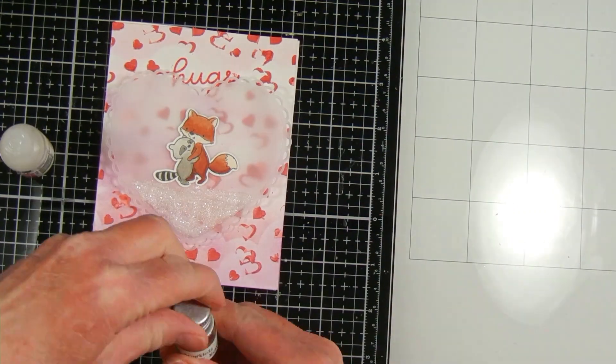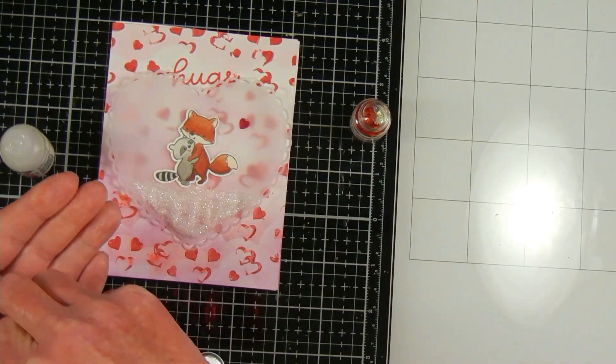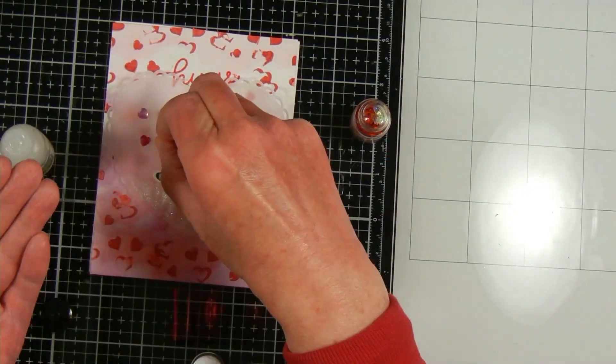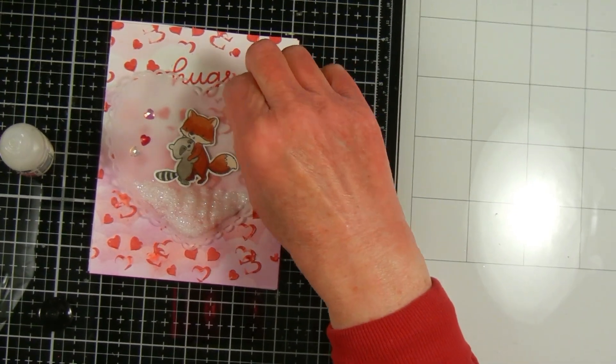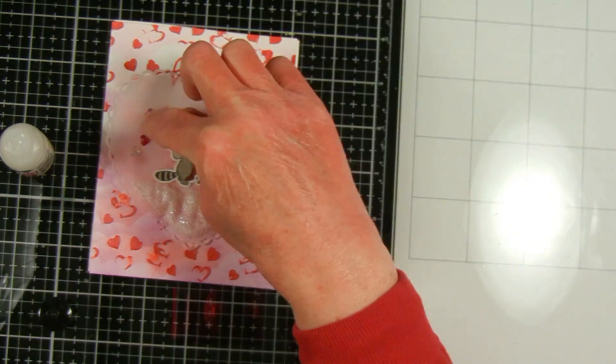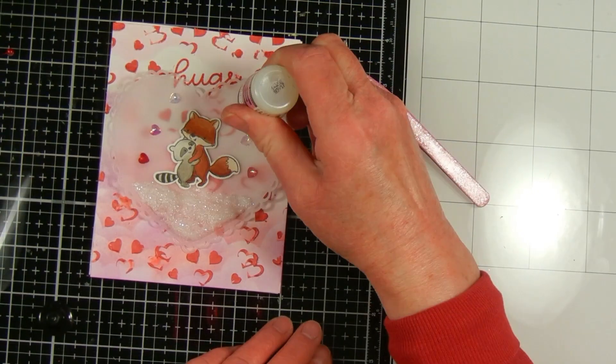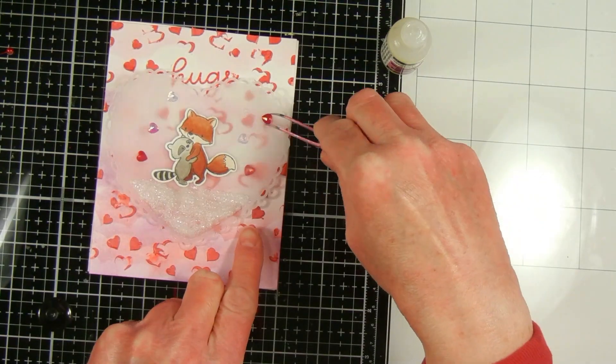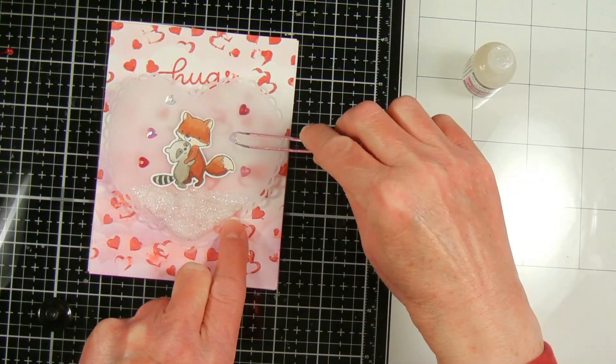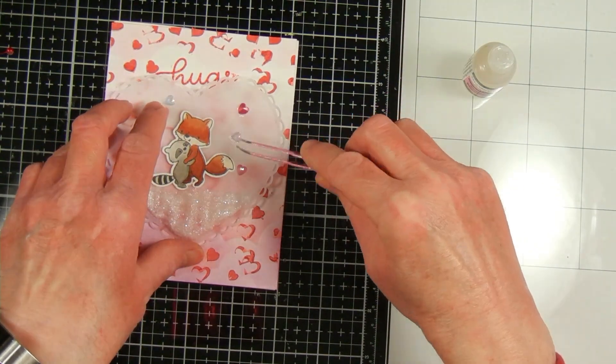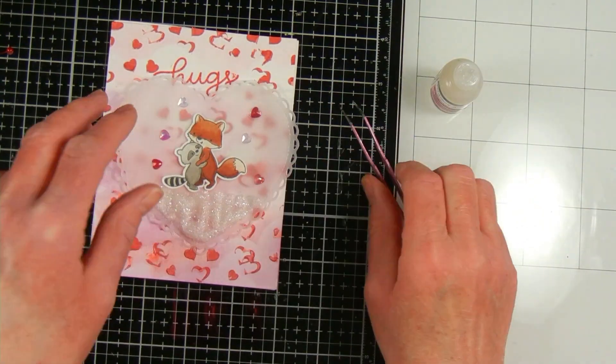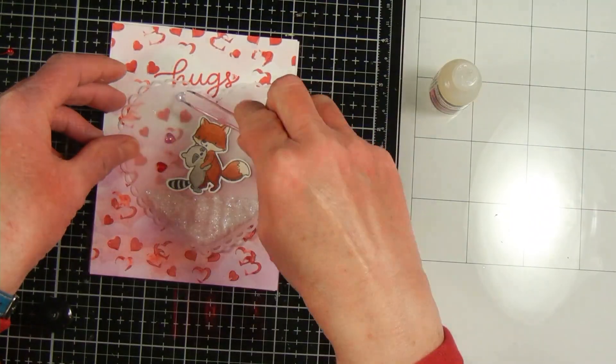Next I'm going to add some, it looks like hearts that are flat backed, and these are from Buttons Galore and More and they're called their Love Sparklets. I'm just adding these as extra decoration and to also bring in some more pink and red. And the other thing is it will give me another place to add adhesive to the back of my vellum, so I'm using some Glossy Accents. I find that kind of holds things better when you're using these heavier and slicker type objects. I like to use Glossy Accents when I'm gluing down anything like buttons or sparklets and things like that.